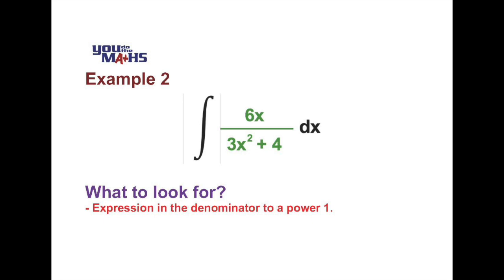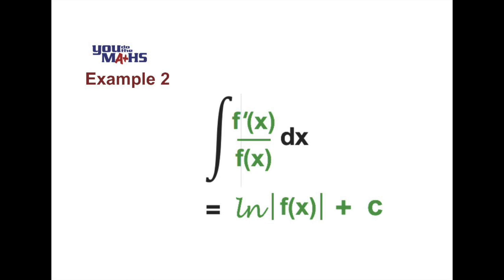So that's one thing we're looking for that suggests it might be a logarithm solution. The other thing we want to find is that the derivative of the denominator should be in the top line, or at least expressed as a factor of the top line. So a summary of that is, if we have an integral which is expressed as a fraction where the derivative of the denominator is the numerator, then the resulting solution or integration we have is the natural logarithm of that function plus a constant.